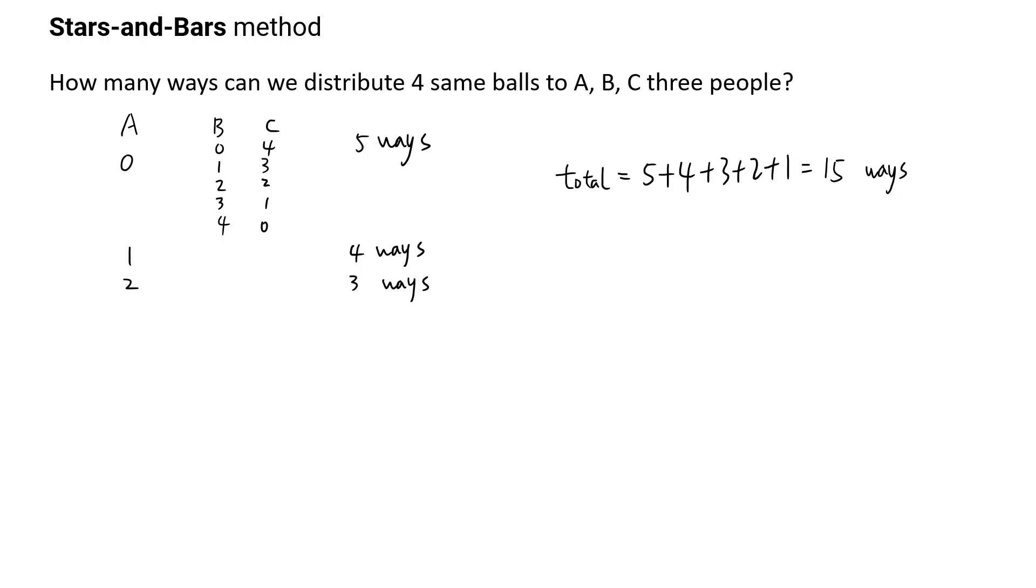If A got zero, then it can be 0, 4, 1, 3, 2, 2 - there are five ways. When A got one, there are four ways for B and C. A got two, there are three ways. In total, adding together, there are 15 ways.